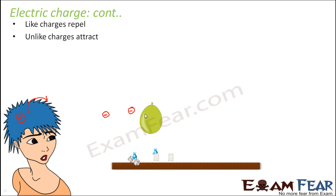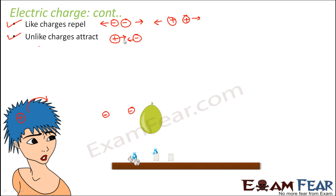So the conclusion is: like charges repel each other — negative charges repel each other, and positive charges also repel each other, because they are similar charges. Whereas unlike charges will attract each other — a positive and a negative will tend to attract each other. And if there is a charged object (positive or negative) near a neutral object, there will also be attraction.